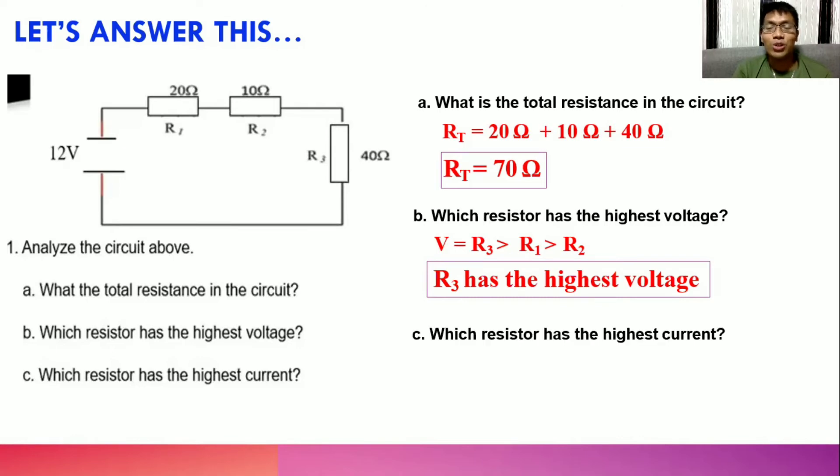Last question. Which resistor has the highest current? The correct answer is none of them. Why? Because we have to remember that in series connection, they all have equal current. Despite having different resistance value, component 1, component 2, and component 3 have the same current. I hope the concepts are clear to you now.